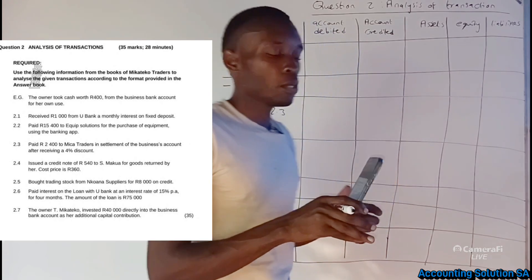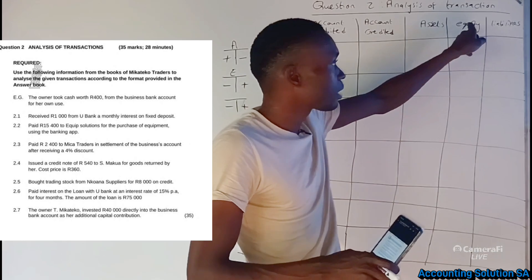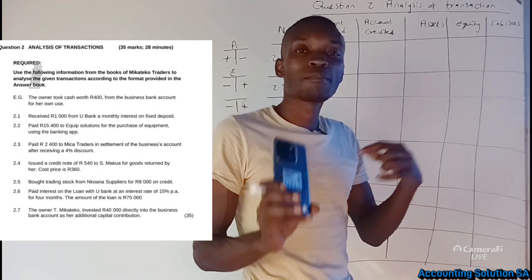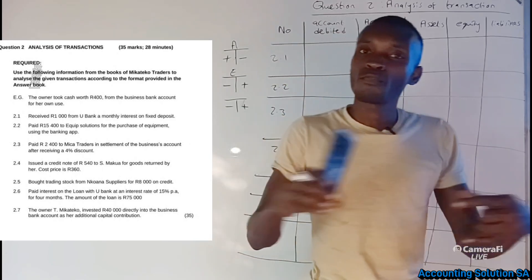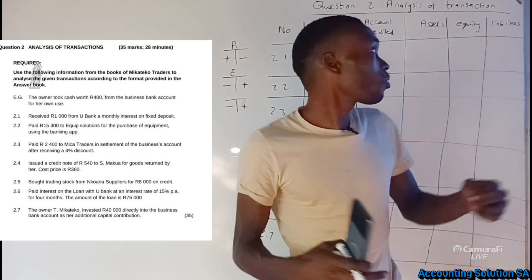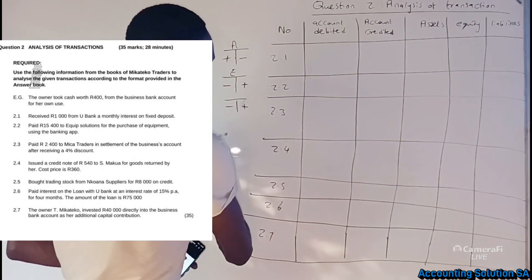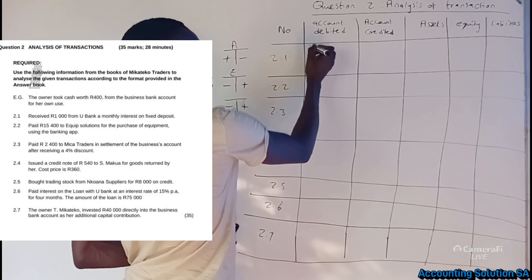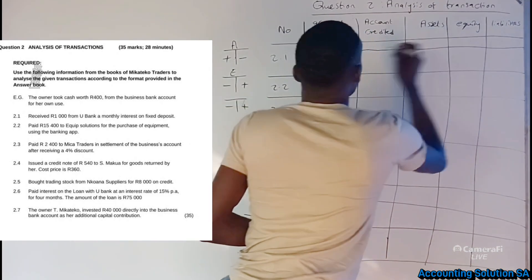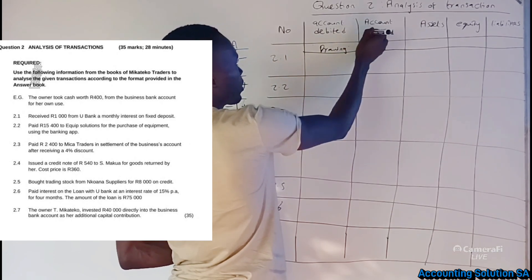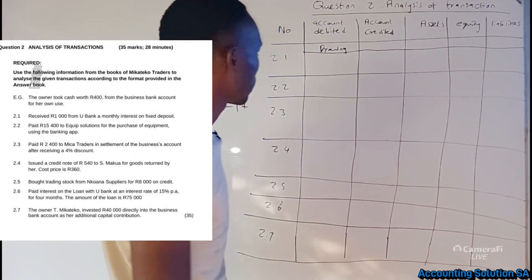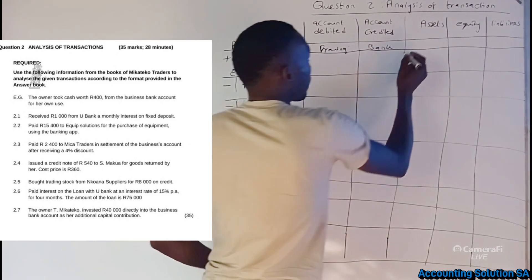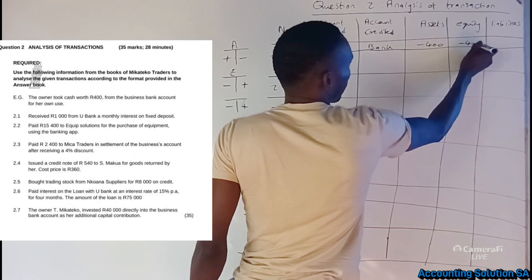The owner took equity — which is net worth — out of the business, so equity is going down. Equity decreases on the debit side, so we debit Drawings. The owner took cash, which is Bank, so bank is decreasing. Assets decrease on the credit side, so we credit Bank. The amount is minus R400 and minus R400.